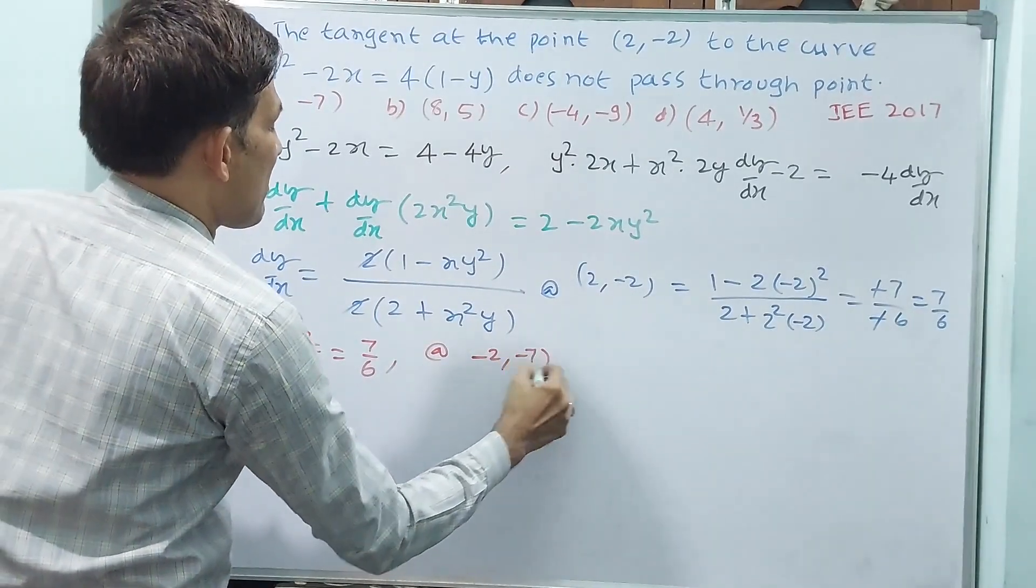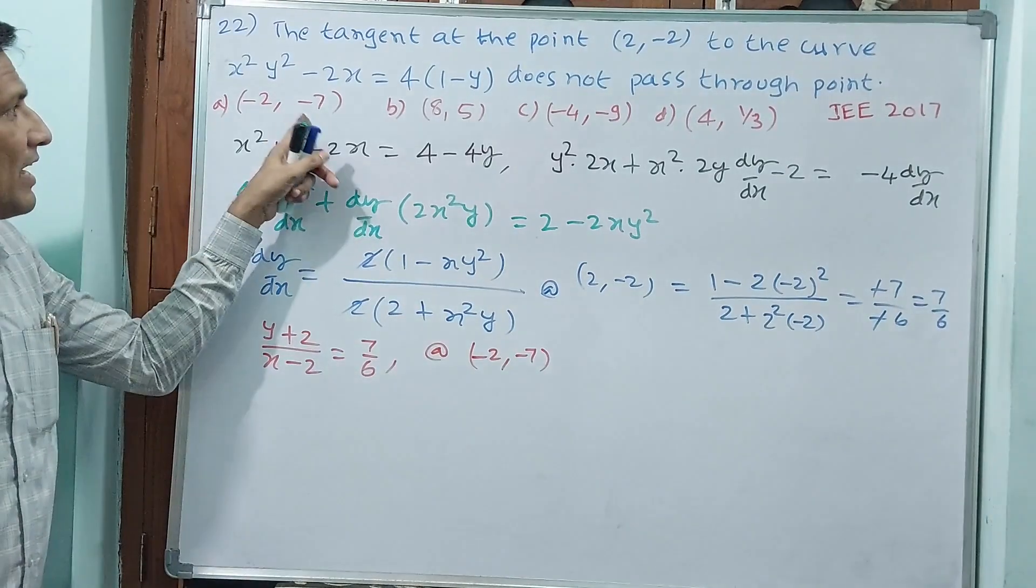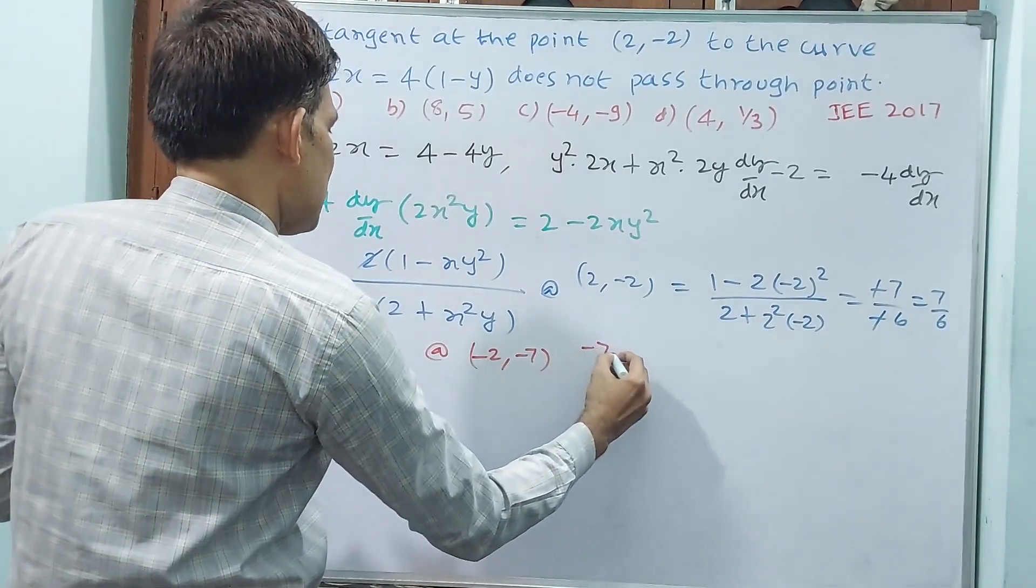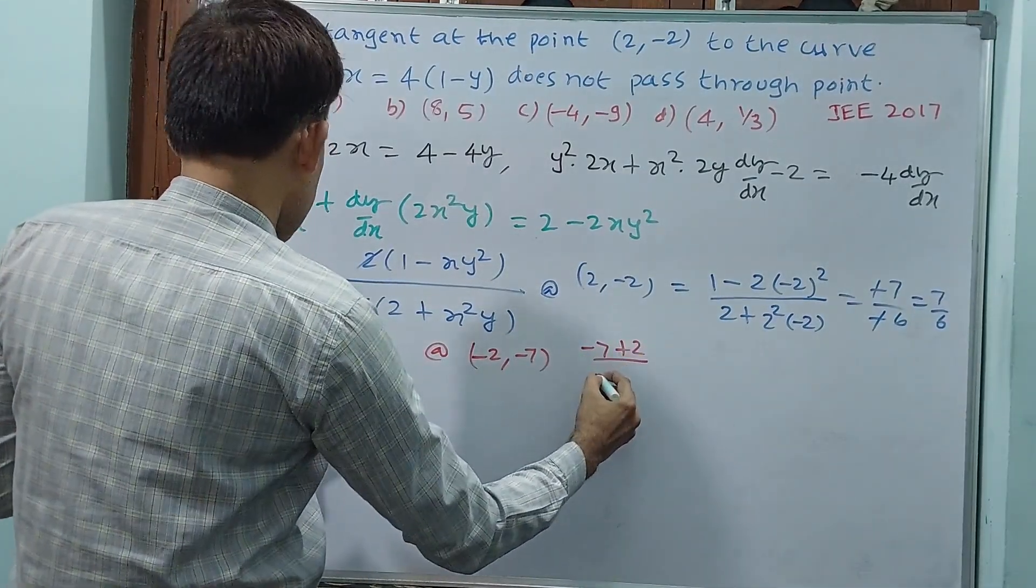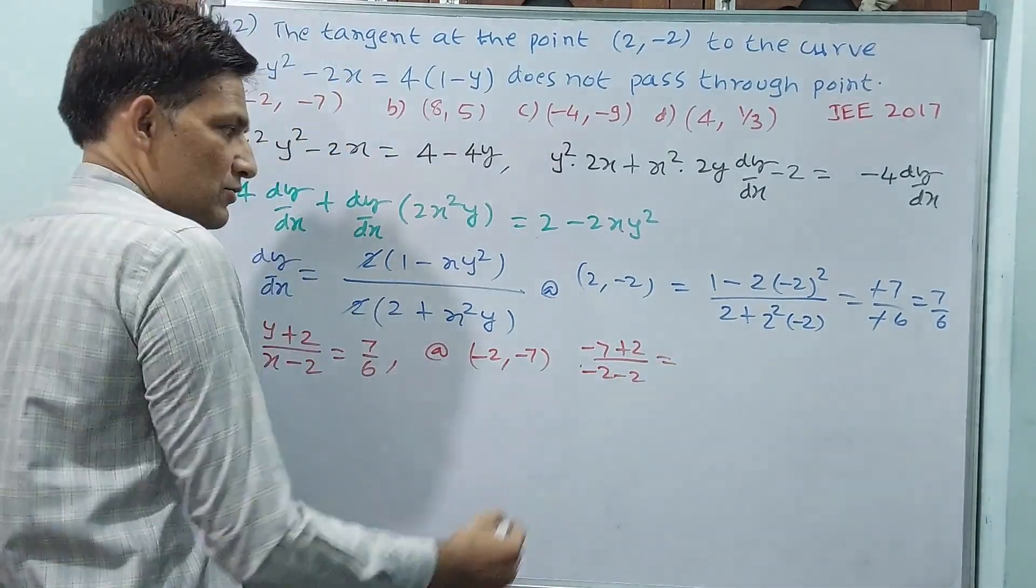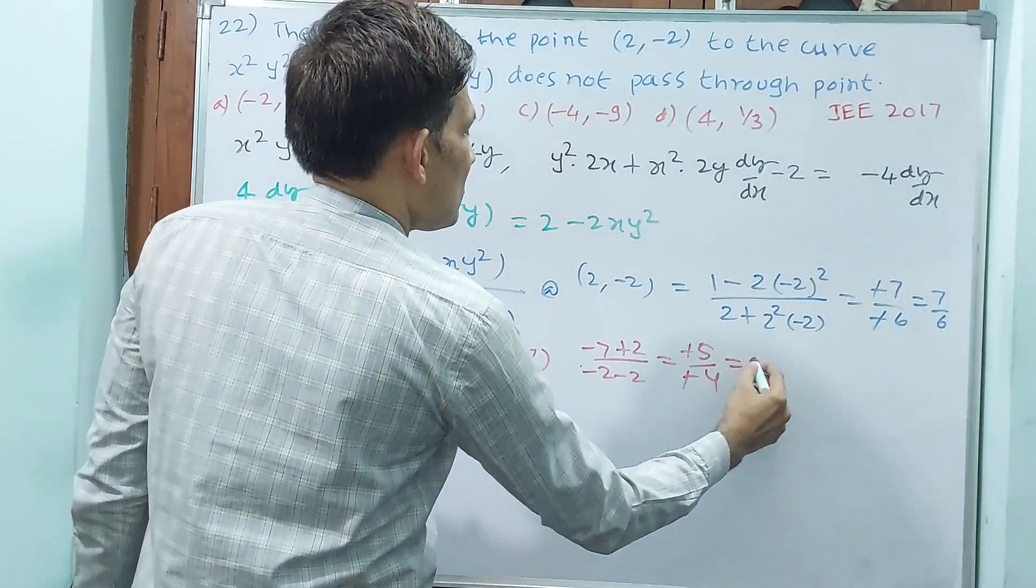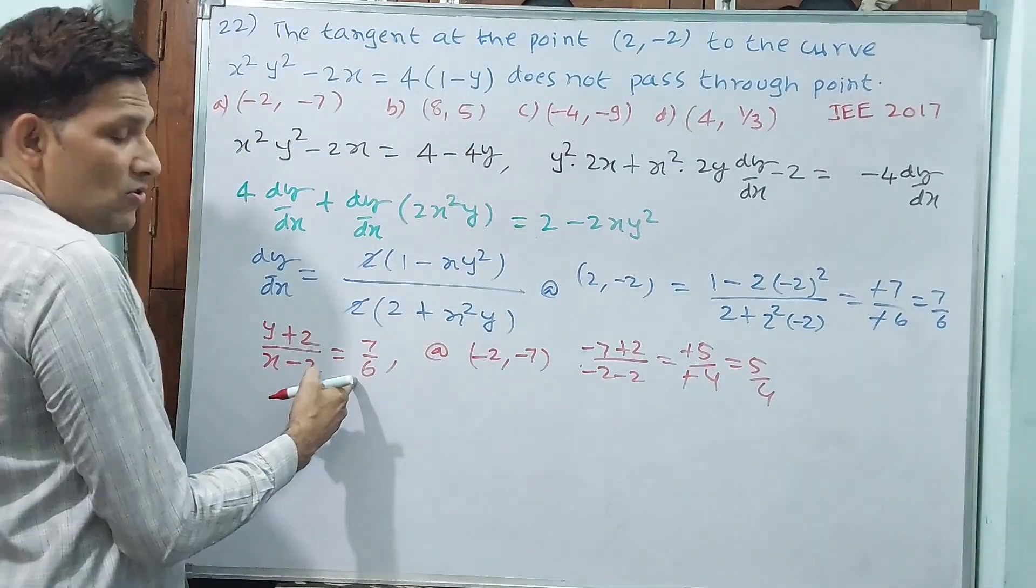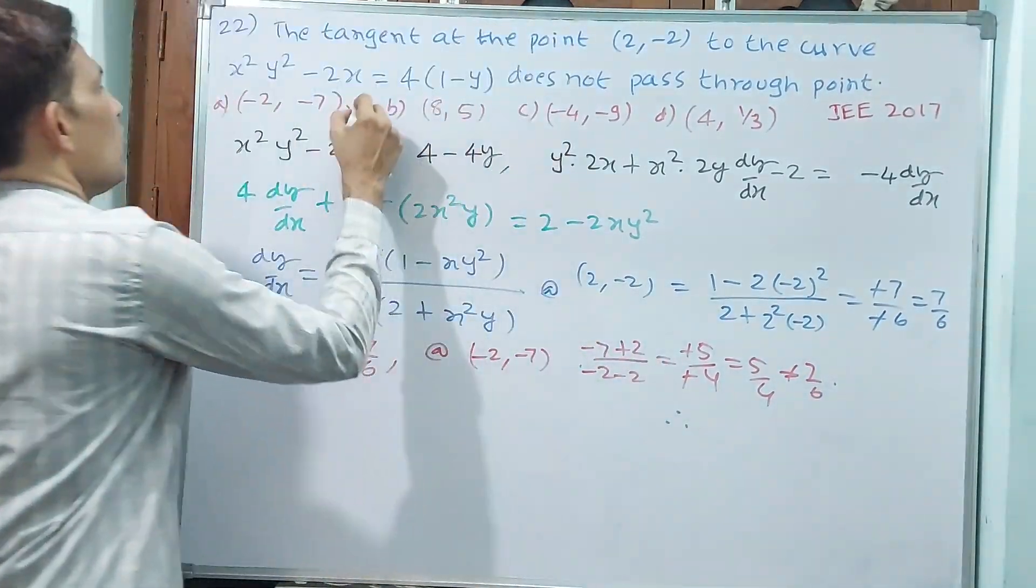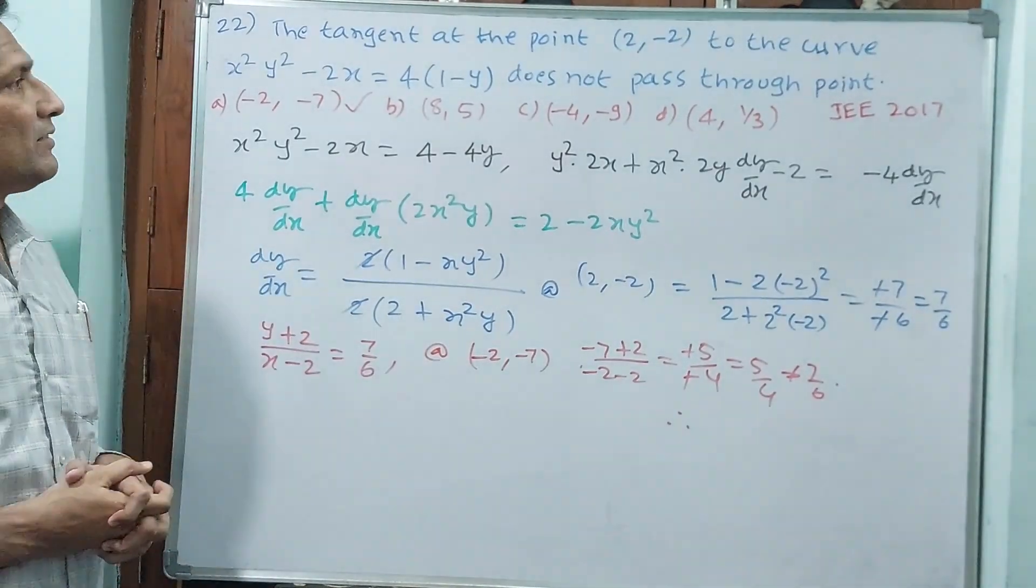At (-2, -1), LHS should equal RHS if it is passing, otherwise not passing. See, y means -1. So (-1 + 2)/(-2 - 2) = -1/-4 = 1/4. Not 7/6. Not equal to 7/6. Therefore, (-2, -1) does not pass through this equation.